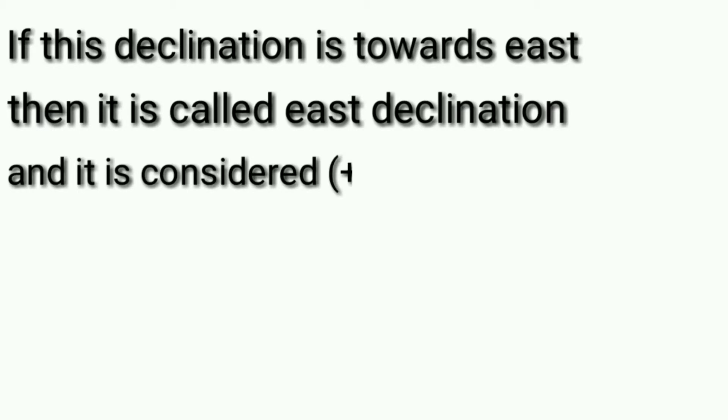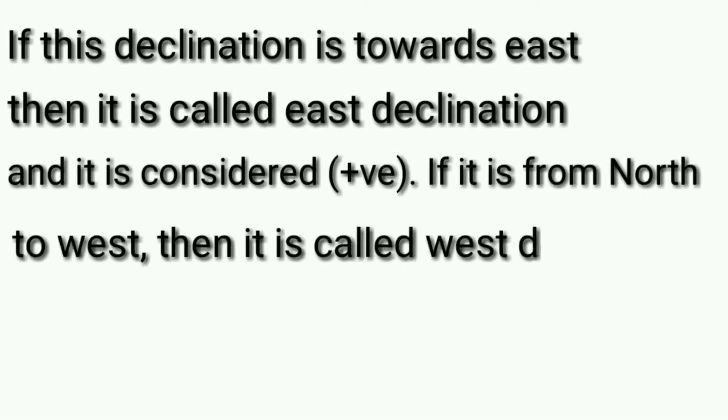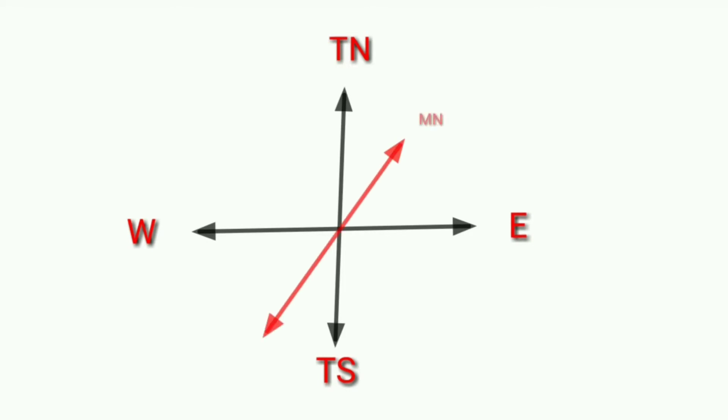If this declination is toward east, then it is called east declination and it is considered positive. If it is from north to west, then it is called west declination and is considered negative. East declination and west declination both are represented by a simple diagram.